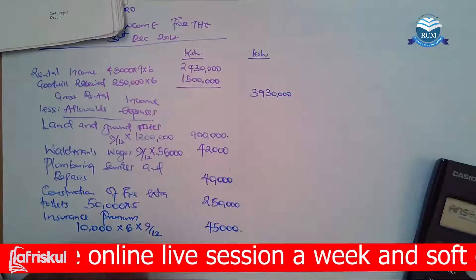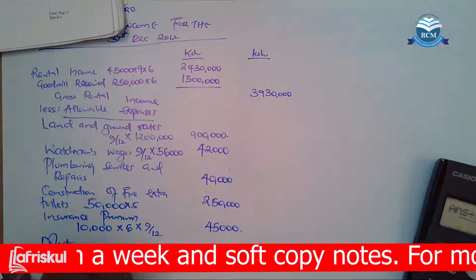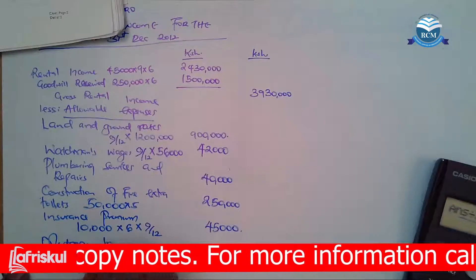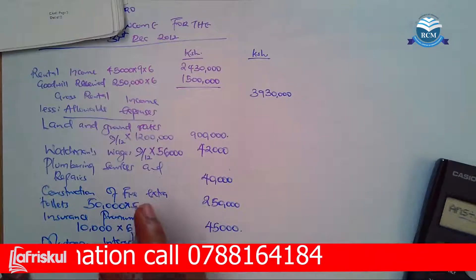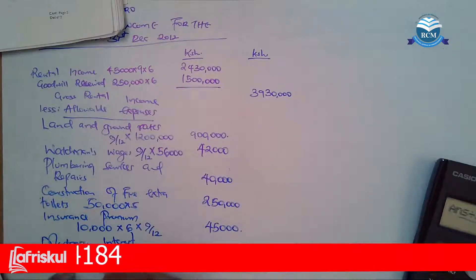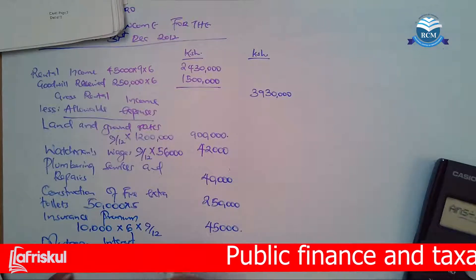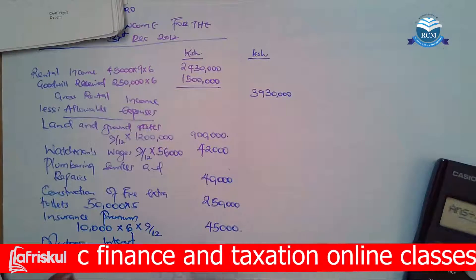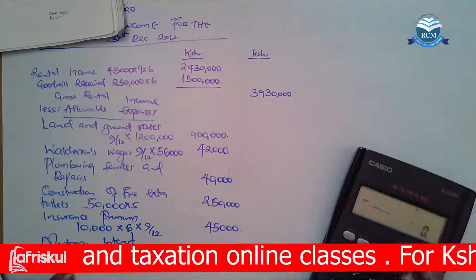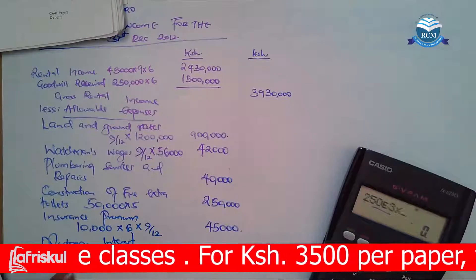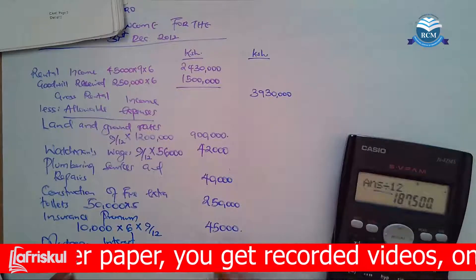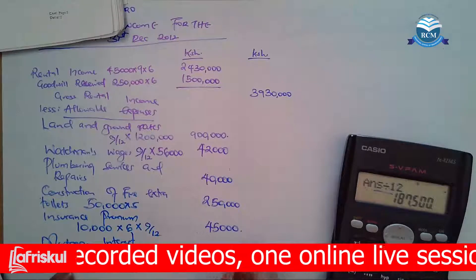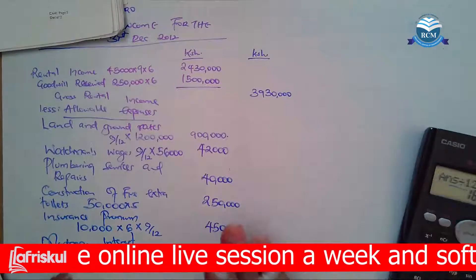Then we have the mortgage interest. The mortgage interest is covering the full year, so you apportion for 9 months. Take 250,000, multiply by 9, then divide by 12, and you get 187,500.